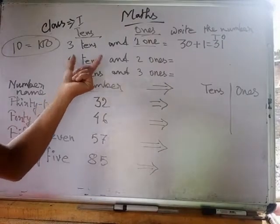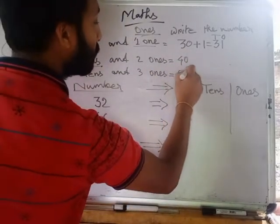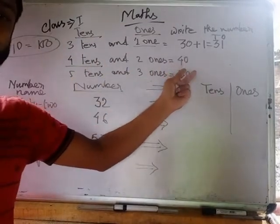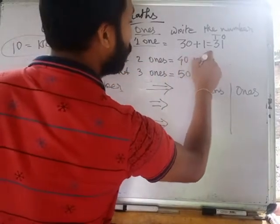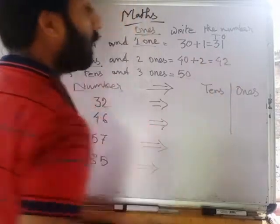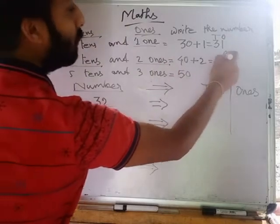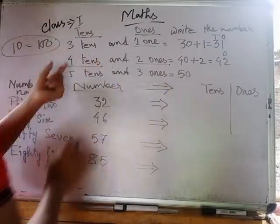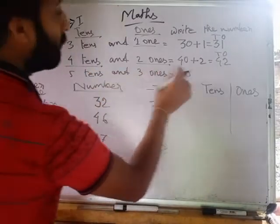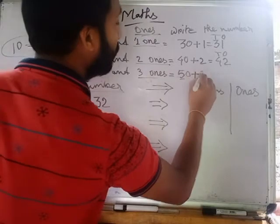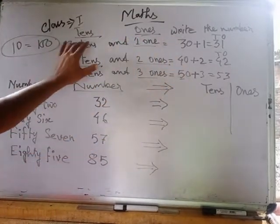If it is four tens and two ones — four tens means 40, and two ones means 2 — so it is 42. Two is at the place of ones and four is at the place of tens. For five tens and three ones, that is 50 plus 3, which equals 53. We should write 53.